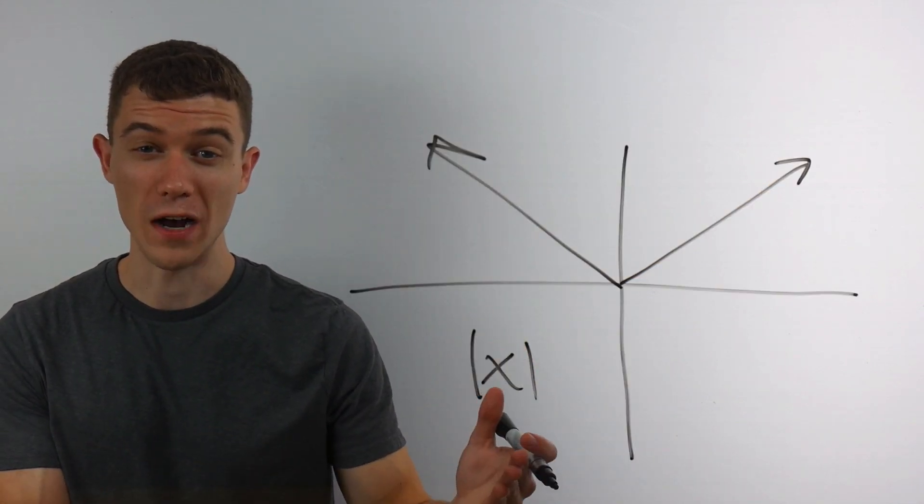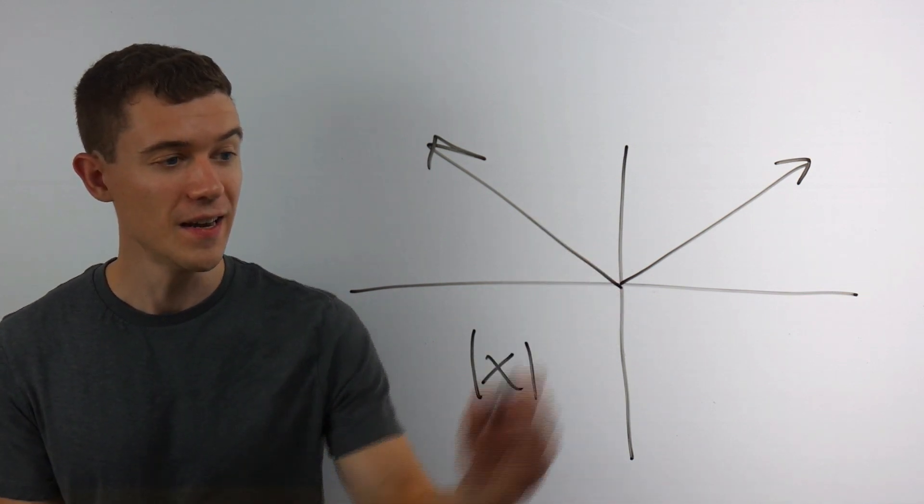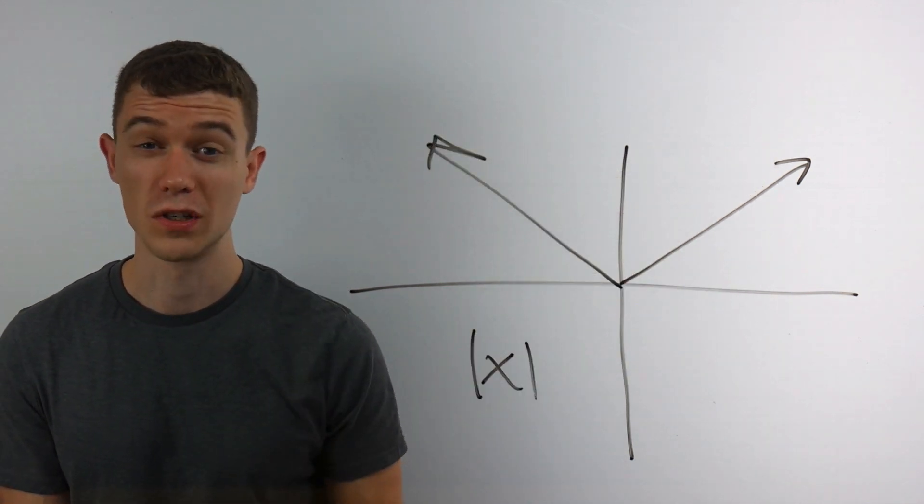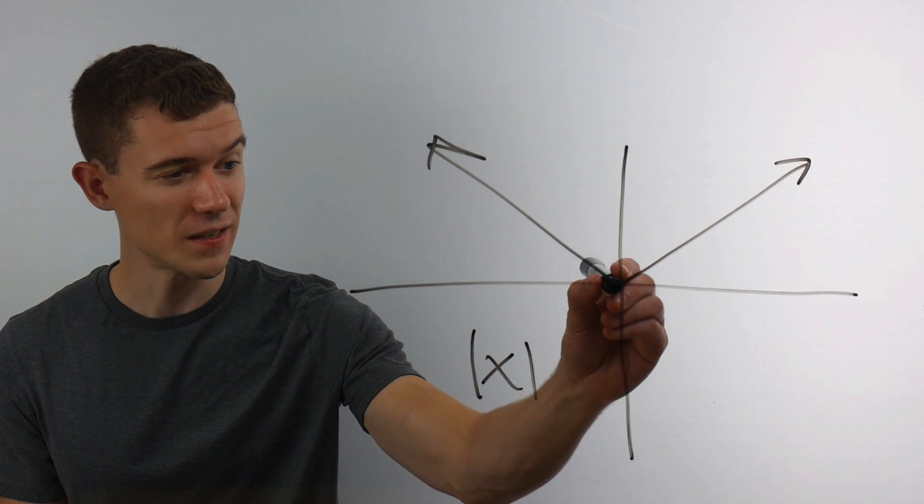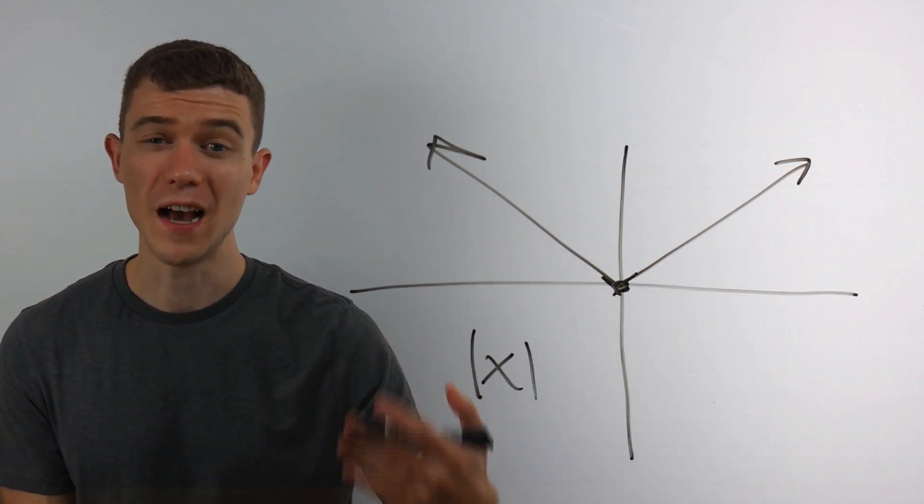Here's the graph of the absolute value of x. It looks like a v. And these lines are slope 1.